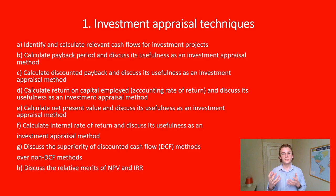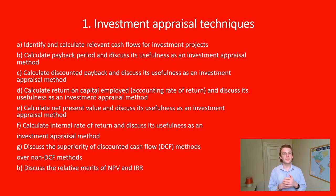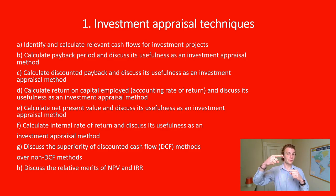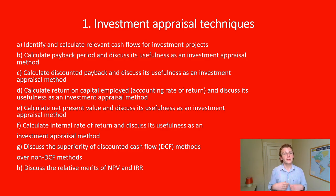For the payback period, you need to know the formula and work with the table format. In essence, calculate the accumulated cash flow year on year from the initial outlay. For example, if you start at minus 1,000 then receive 400, 400, and 400, the payback period falls between years two and three: minus 200 divided by 400 gives you two and a half years. This comes with question practice.